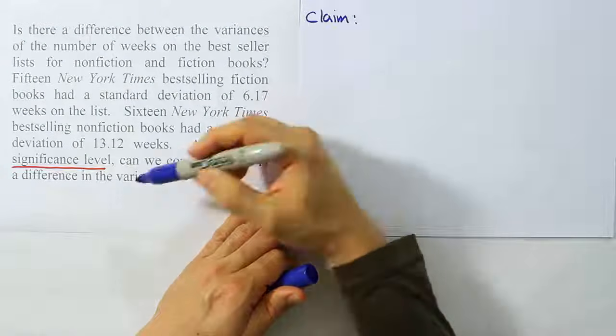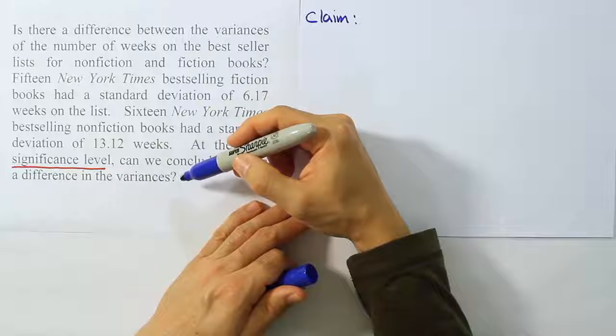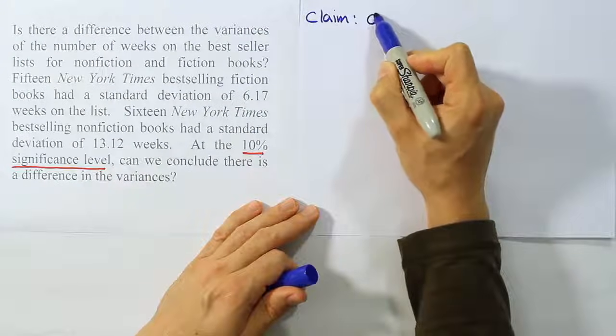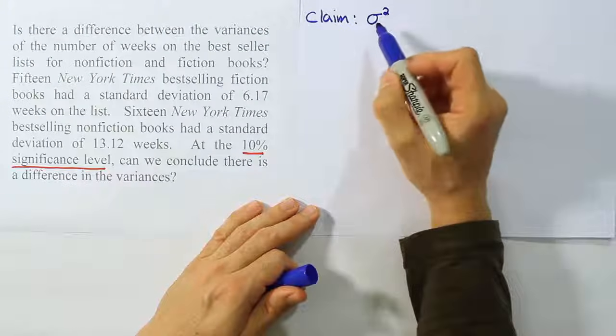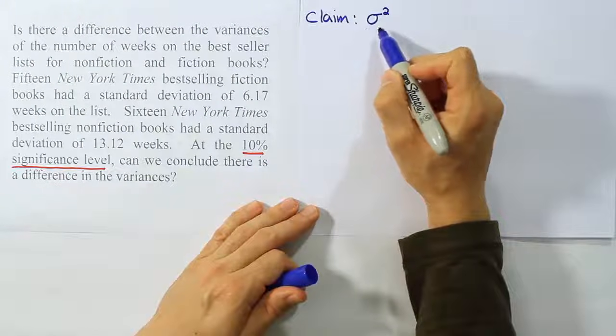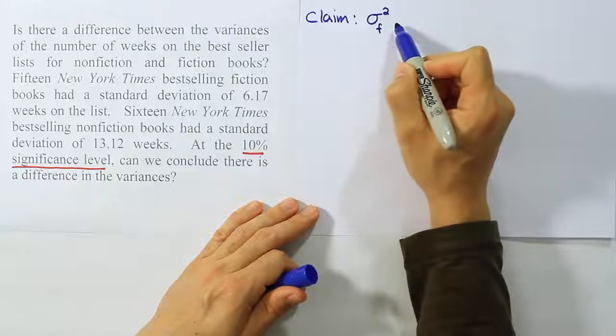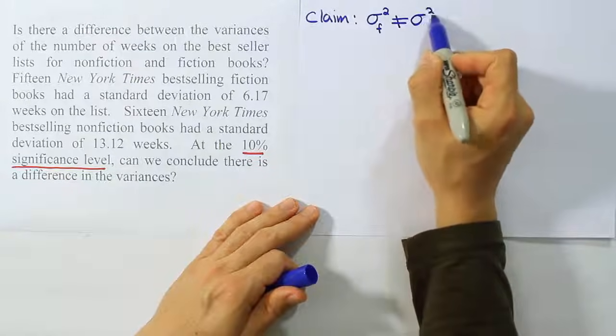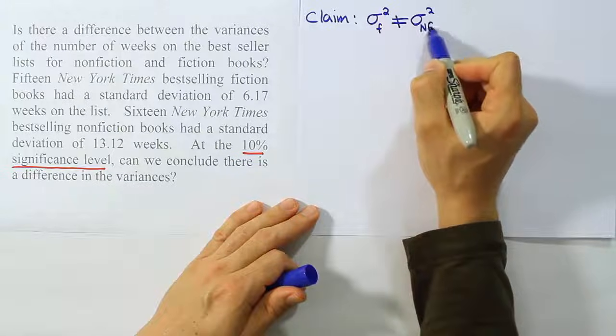It says here, can we conclude there's a difference in the variances? A difference in the variances. Well, that would mean essentially that what? The variance, which I'll call sigma squared, let's say the variance for fiction books, starting first, fiction books, is not equal to the variance for non-fiction books. So NF for non-fiction.